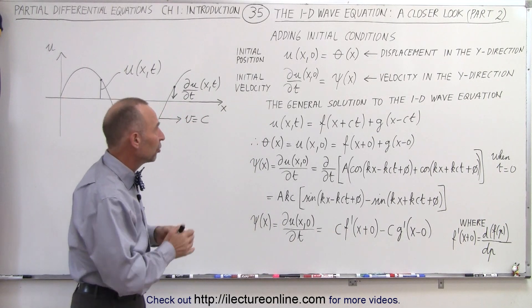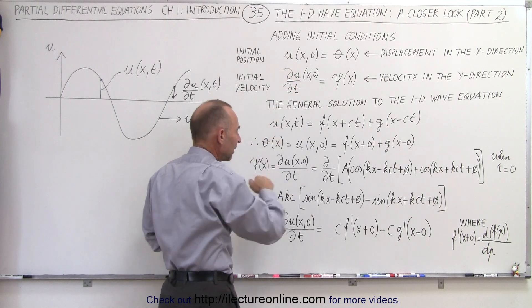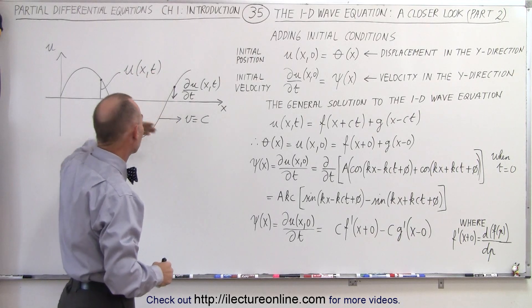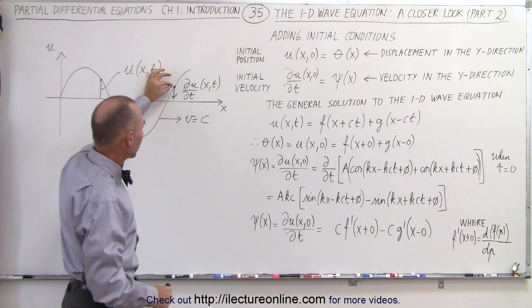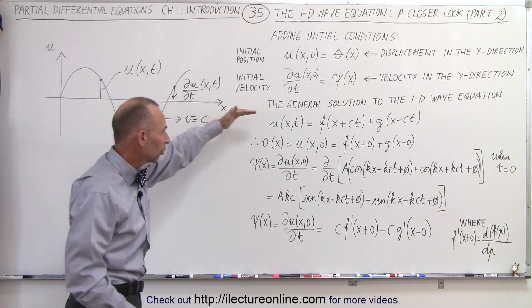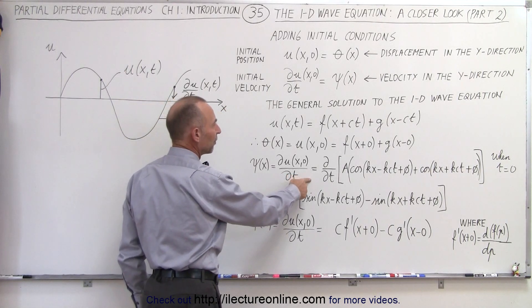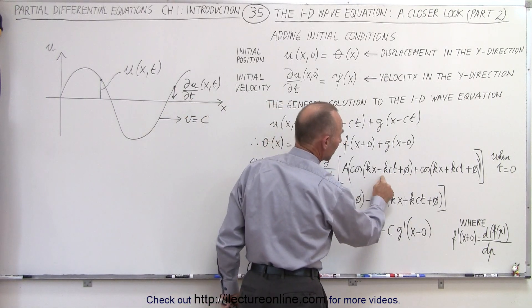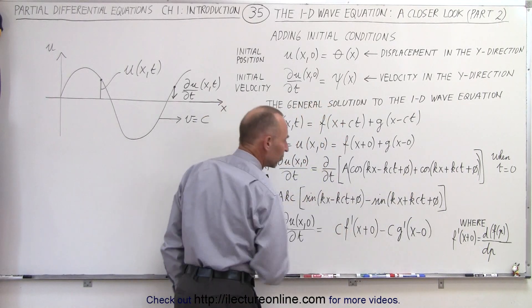If we want to find the initial condition when t equals zero for the velocity — not the velocity of the wave moving in the direction of the wave, but the velocity of a point on the wave — for example, if this were a string, you'd see the string goes up and down. You pick a point on the string and keep track of how fast that point is moving up and down, perpendicular to the velocity of the wave. When we take the first derivative of that and write the equation in terms of cosine of kx minus kct plus the phase angle, the derivative will look like this.